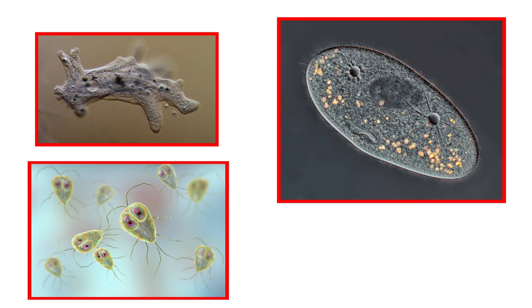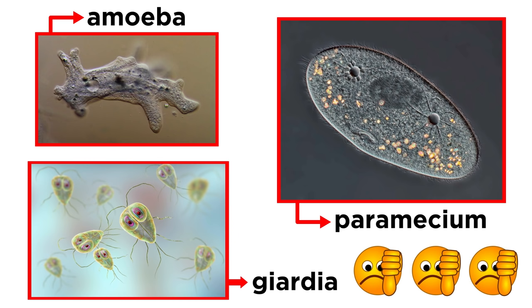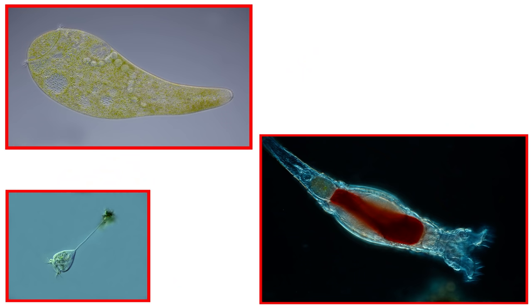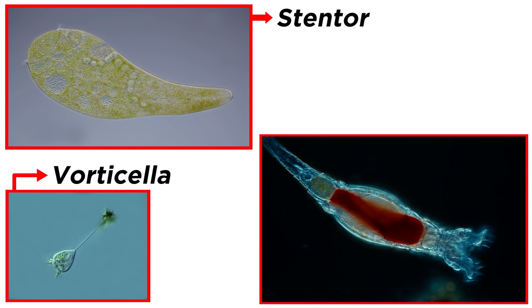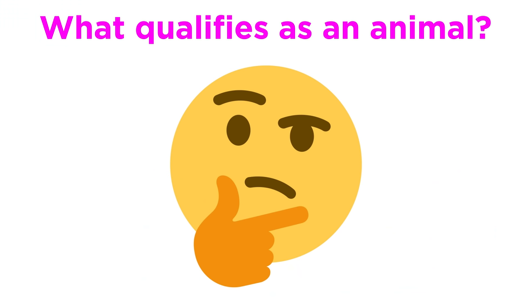To go even further, what about amoebas, and paramecium, and giardia? They all kind of look like animals, but they're not. It gets even more confusing when we talk about stentor, vorticella, and rotifers. Superficially, they all look similar, but rotifers are animals, while stentor and vorticella are not.